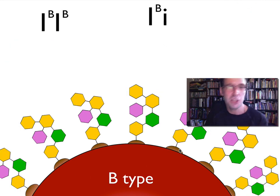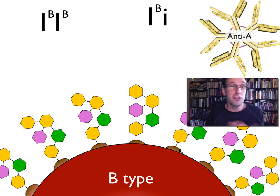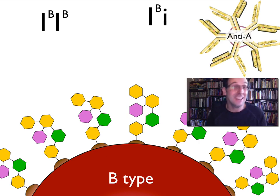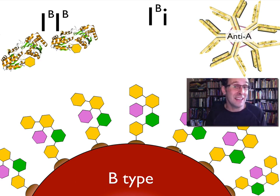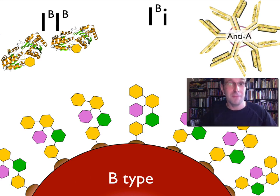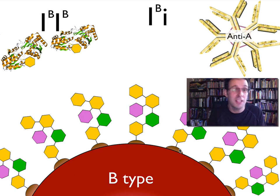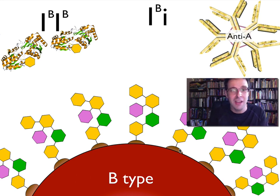Similarly, somebody who has B-type blood will produce anti-A antibodies — again, naturally, without having been exposed to A-type blood. A person who has inherited the Big I-B allele from both parents will produce a normal glycosyltransferase enzyme that converts H-antigen into B-antigen.